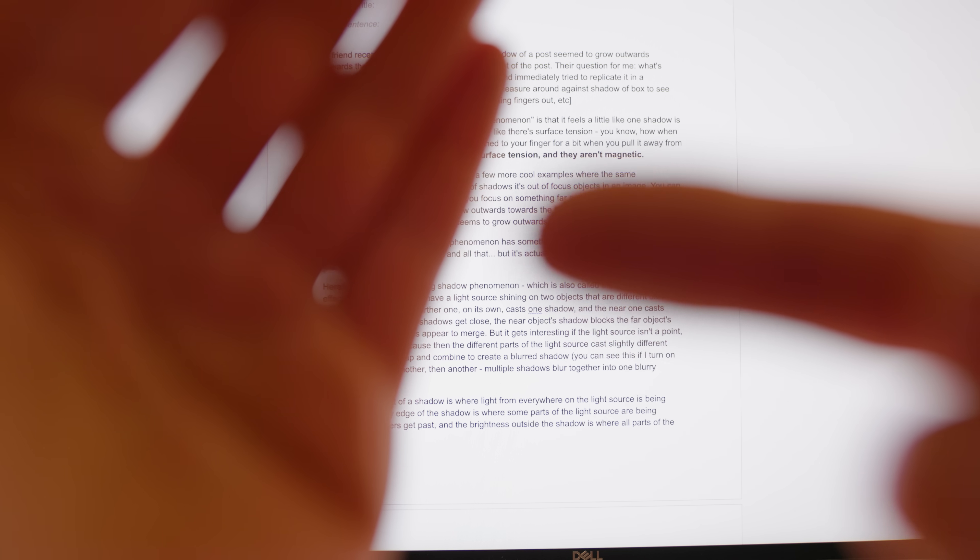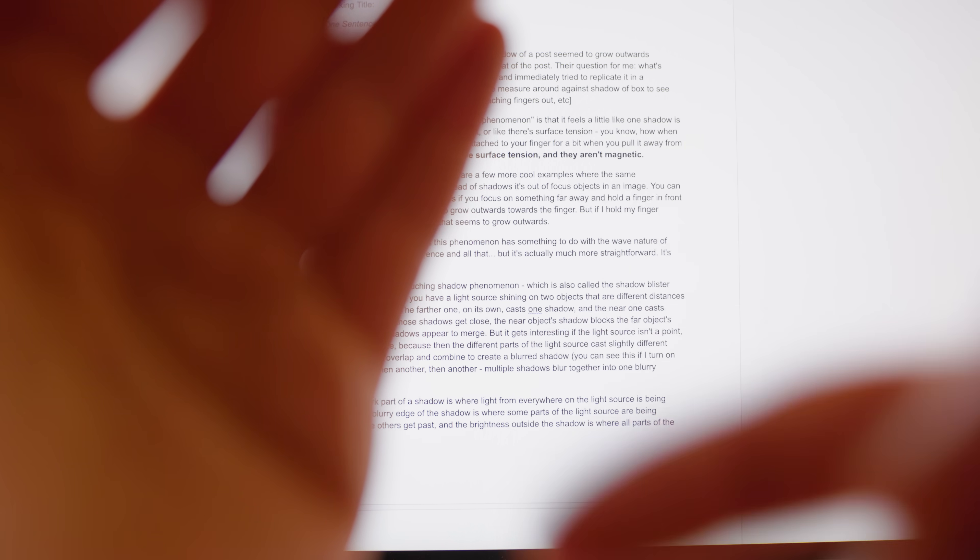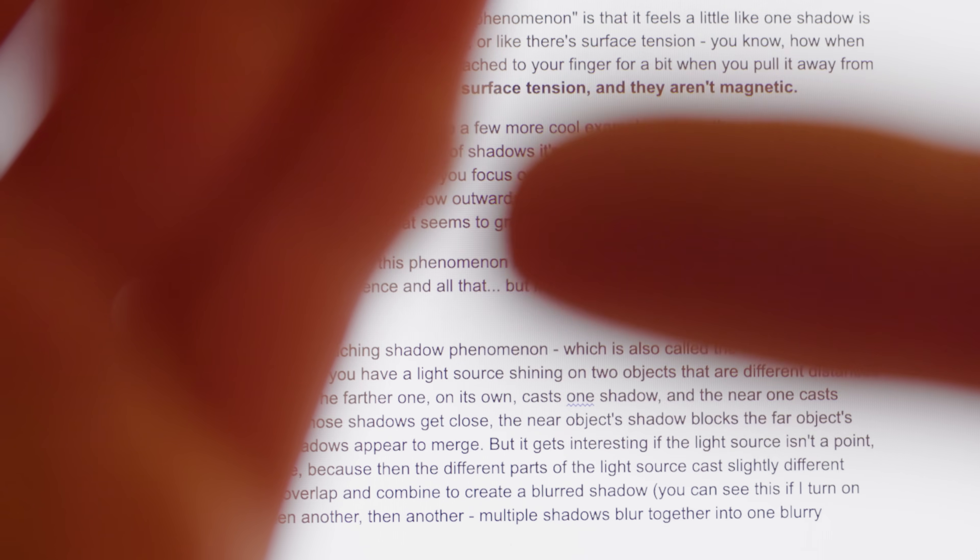Here's what the result looks like for a real blurry image of a point source of light. The net result for an extended blurry object like your hand is that the shrinking of all the combined bokeh of the light shining through between the hand and the finger makes the hand appear to blister outwards towards the finger. But it's really the bokeh that's shrinking.